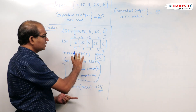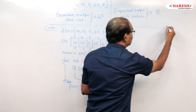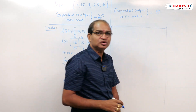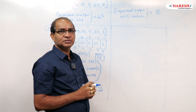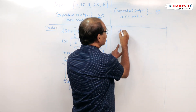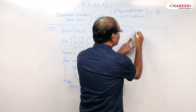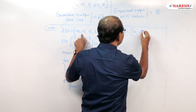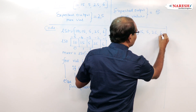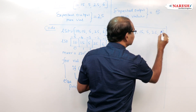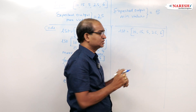Similarly, I will write the same coding for the minimum part also. As usual, I will take LST equal to 10, 15, 5, 25, 6. Then I will start the same logic.